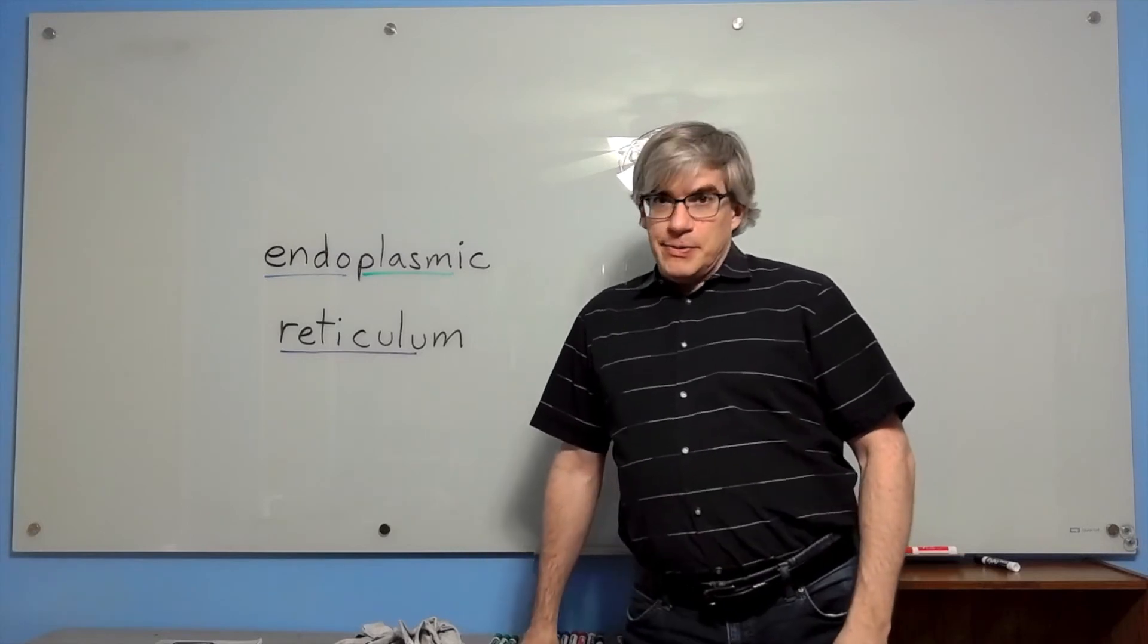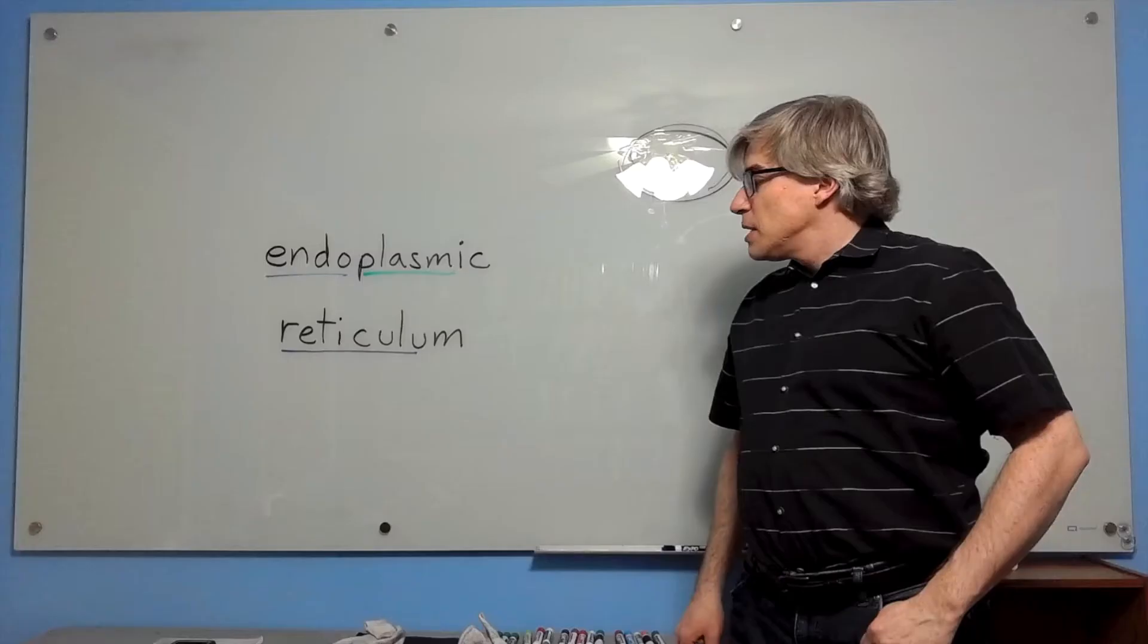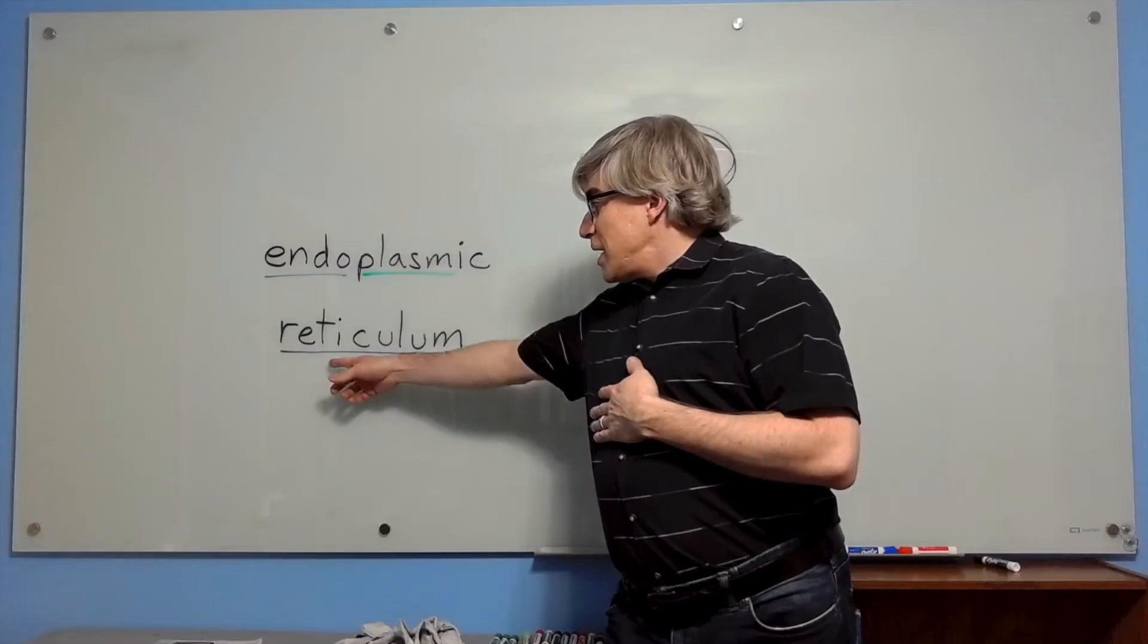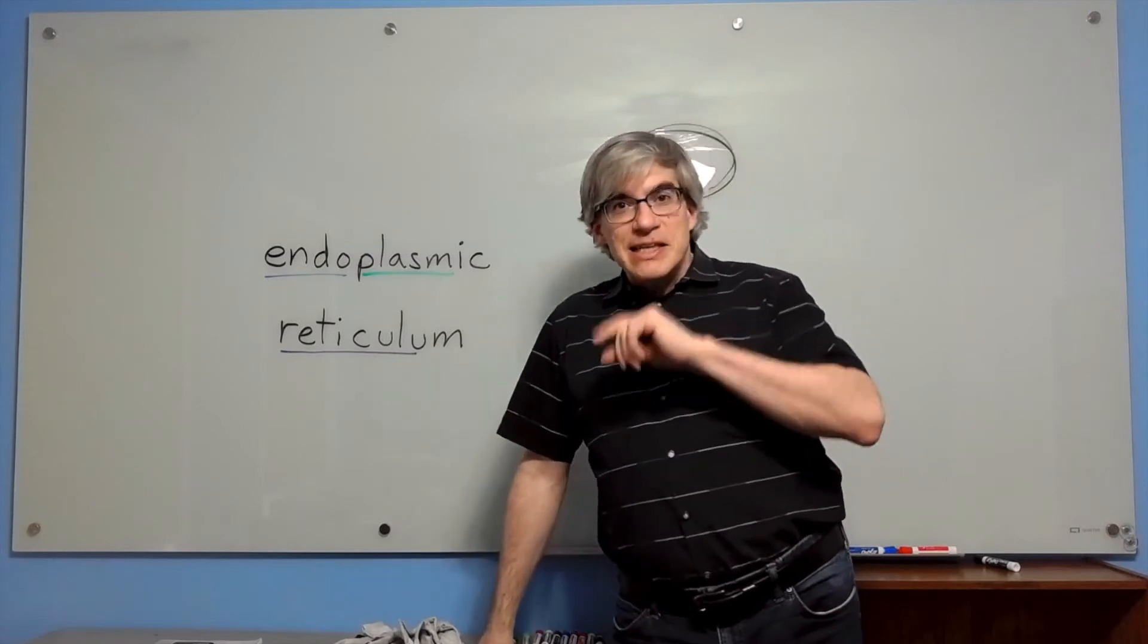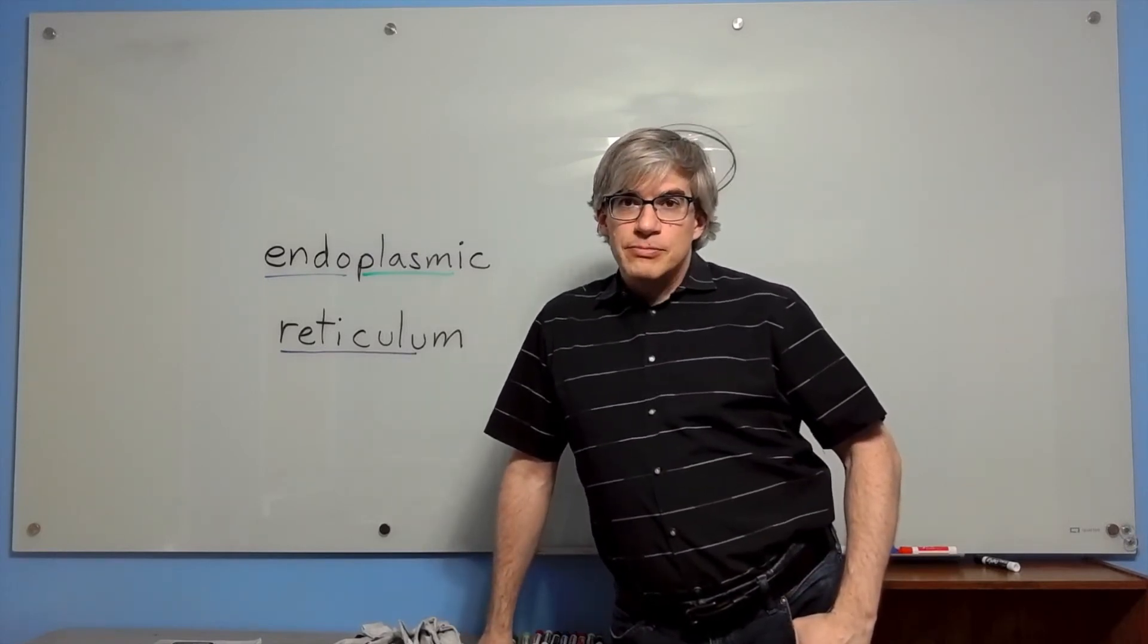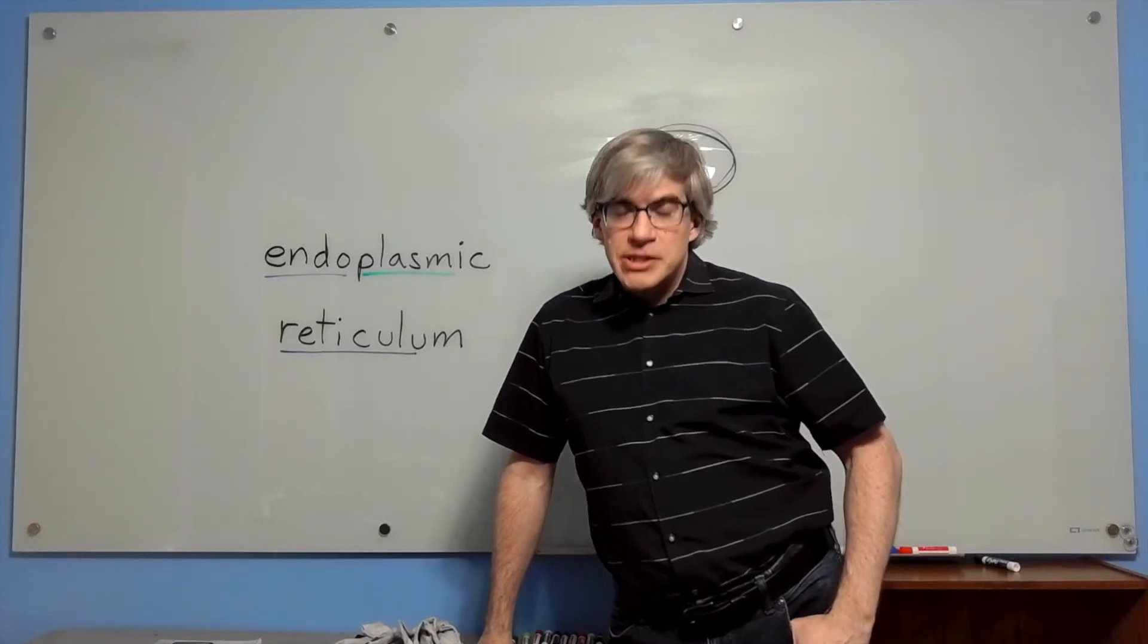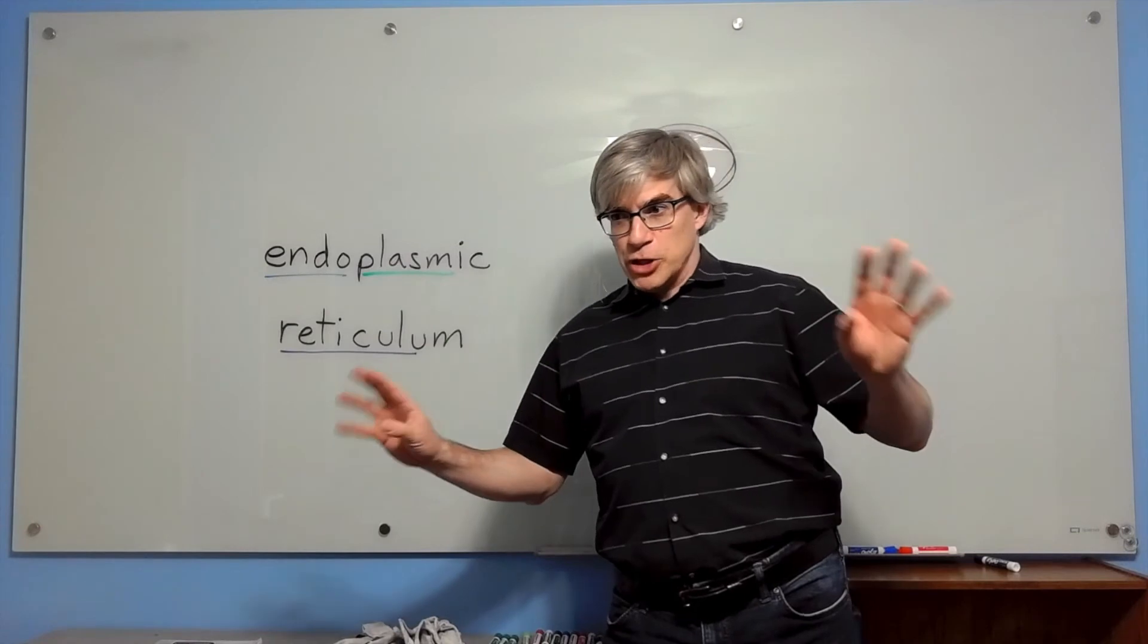Endo means in in Greek. Plasm basically means stuff. In Latin, retic or reticule means a net. Reticulum basically means it's a little net. The little net in the stuff. That is seriously all this says. The little net in the stuff. Endoplasmic reticulum.